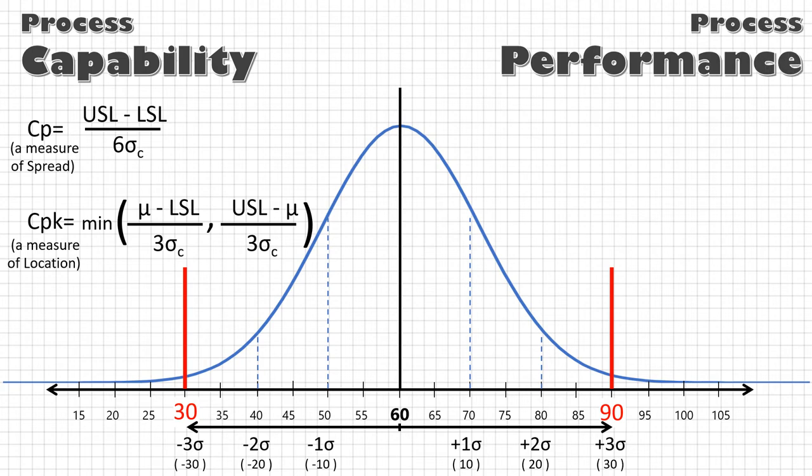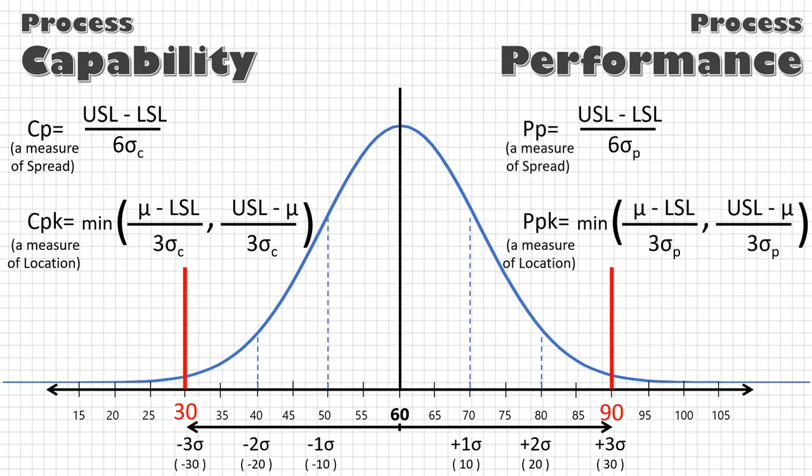Similarly, Pp and PpK are indices to measure the process performance. Basic calculation formulas for Pp and PpK remain the same as for Cp and CpK. The only difference is calculation of sigma.